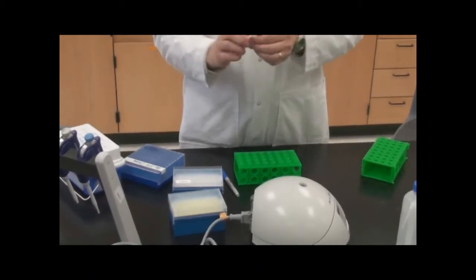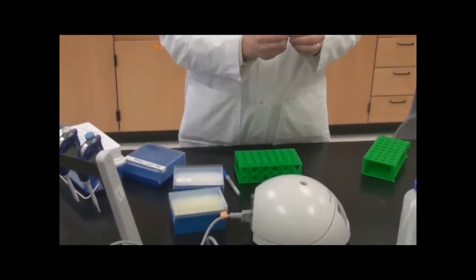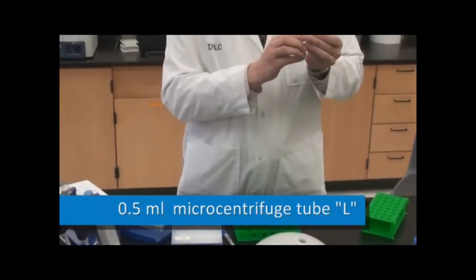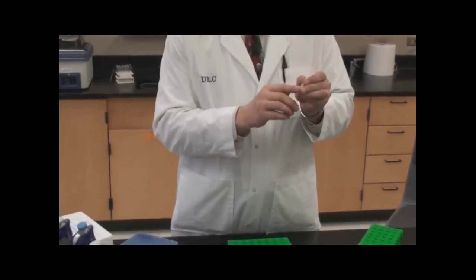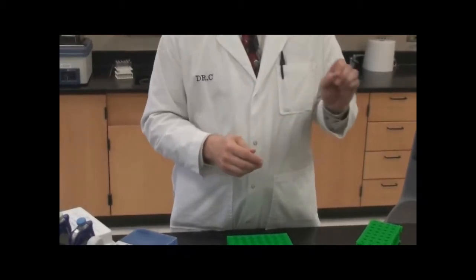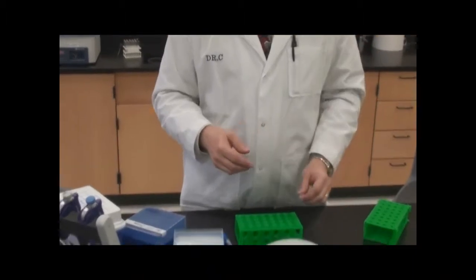It only takes about one microliter, and so when you come in you're going to find these smaller test tubes. It's going to have an L on top of it, and that stands for the ligation buffer. In the bottom you'll almost not even be able to see it, but there's going to be a one microliter drop, like less than a drop, of ligation buffer, and so you'll just take this tube and make your ligation reaction right in this tube.